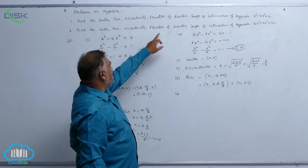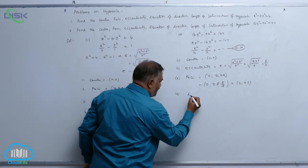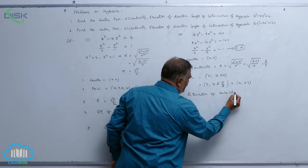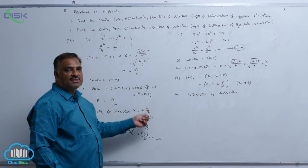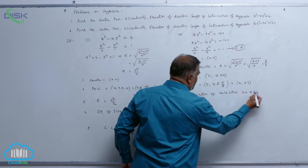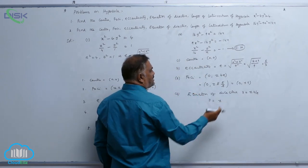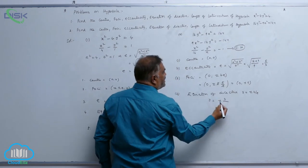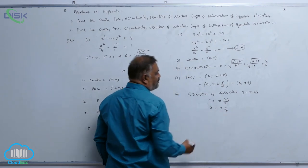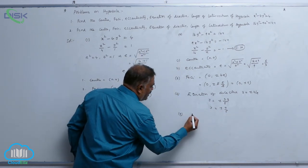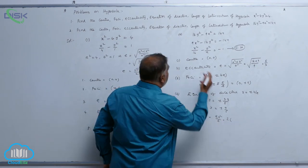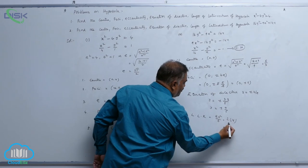Equation of directrix for the conjugate hyperbola: y = ±b/e. So y = ±3 ÷ (5/3) = ±9/5. And the length of latus rectum LLR = 2a²/b = 2×16/3 = 32/3 units.